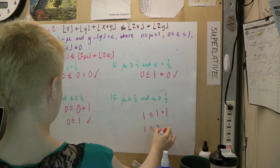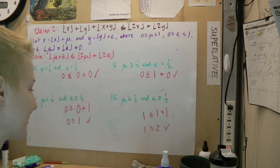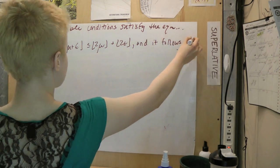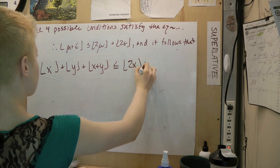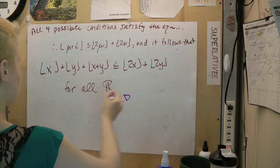In the fourth case, mu and epsilon are both greater than or equal to one-half, so the left side is one and the right is one plus one. Four for four, success! So our new claim is true in all cases, and since it's equivalent to our original claim, we have proven that our original claim is true for all reals. Quod erat demonstrandum, woohoo!